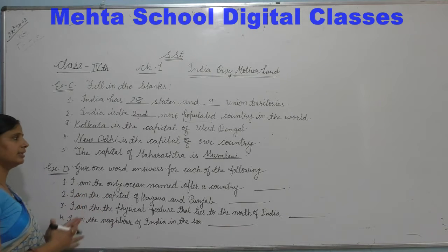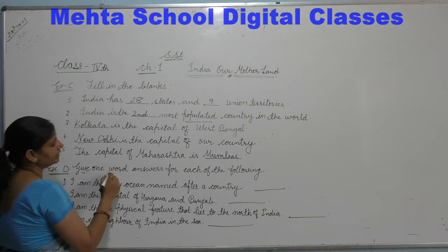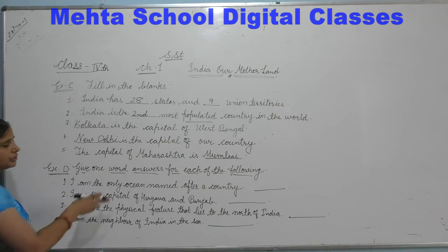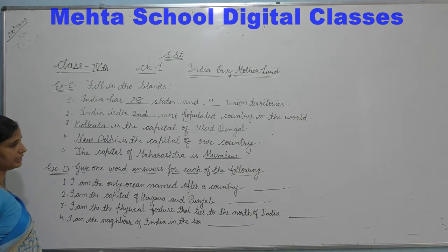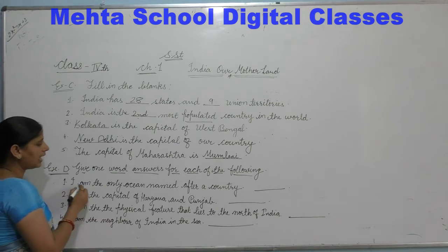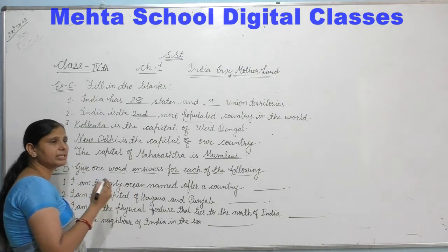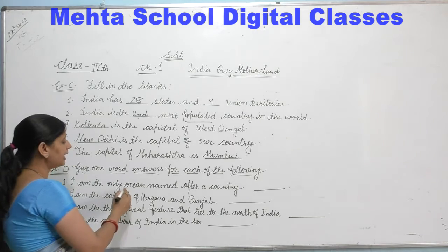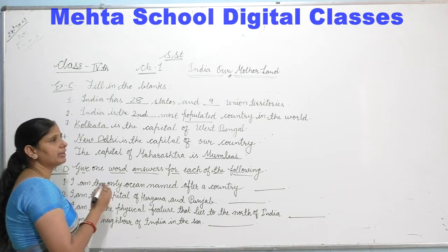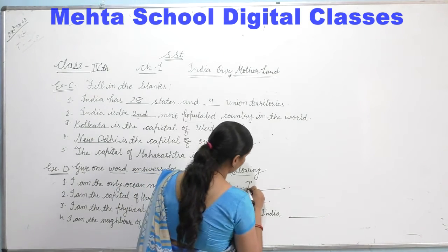Our next exercise is Exercise D — give one word answer for each of the following. The first question is: I am the only ocean named after a country. There is only one ocean named after a country — our India. So which ocean is it? The Indian Ocean.